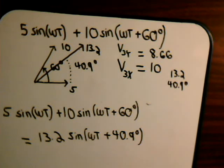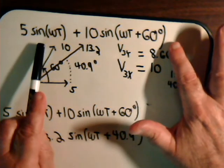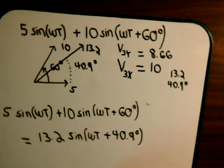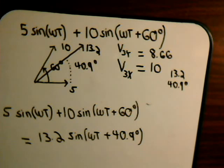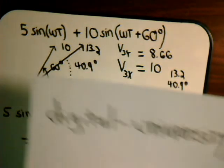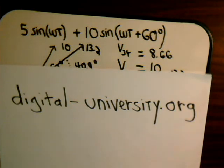So there we've added two alternating current sources together and found the resultant current source. It's much easier to do this using the phasor diagram than by sketching the waves and adding them point by point. Since the angular velocities are the same, we can simply use a phasor diagram. That's it for this problem — just another quick example of how to use phasors to add sinusoidal waves, whether alternating currents or alternating voltages. This is video 77 in our electrical series, and the playlist is at digital-university.org. In the next video we'll talk about capacitive reactance and inductive reactance.